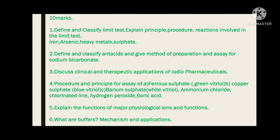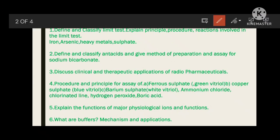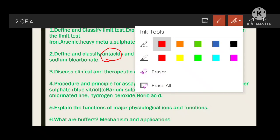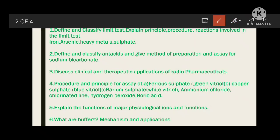For each limit test, you have to write the principle, procedure, reactions, and the reagents used — remember those reagents clearly. The second question is: define and classify antacids, and give the method of preparation and assay for an antacid. First write what an antacid is, then classify antacids into systemic and non-systemic. For preparation, give a complete preparation of sodium bicarbonate and also one non-systemic antacid — aluminum hydroxide.